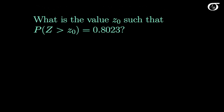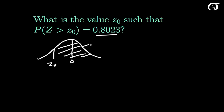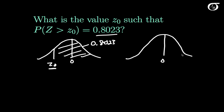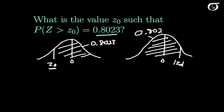What is the value Z₀ such that the probability Z is greater than Z₀ is 0.8023? Draw the standard normal curve. Here's 0; the area to the right of 0 is a half and the area to the left is a half. The probability Z is greater than Z₀ is 0.8023, meaning the area to the right of Z₀ is 0.8023. This is going to be a negative value since it must lie to the left of 0, so we use the symmetry argument: the area to the left of the absolute value of Z₀ must be 0.8023. We find that value, then tack on a minus sign.